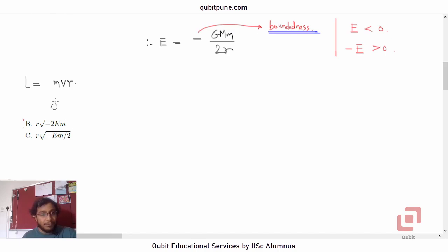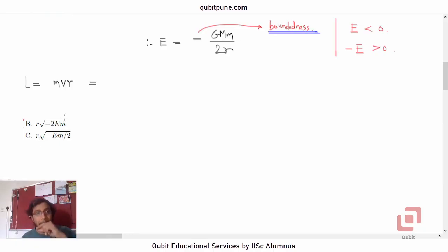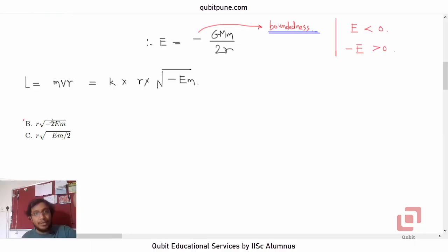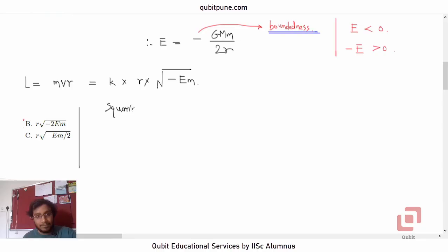We can simplify our task to just determining the constant: in option b it is root 2, and in option c it is 1 over root 2. Let's assume the angular momentum L equals k times r times root of negative em. Squaring both sides, we get m squared v squared r squared equal to k squared r squared times negative em.